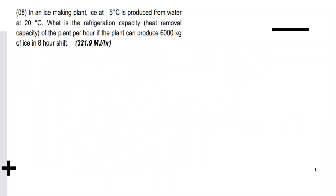In an ice-making plant, ice at −5°C is produced from water at 20°C. What is the refrigeration capacity of the plant per hour if it can produce 6,000 kg of ice in an 8-hour shift? We analyze how the water becomes ice: from 20°C, it first cools to 0°C — that's a temperature change while still water.